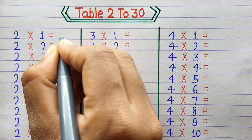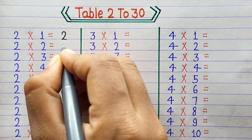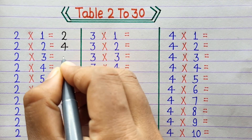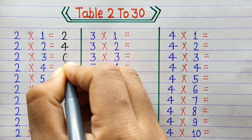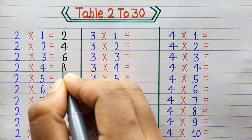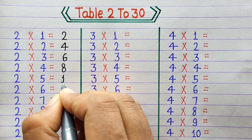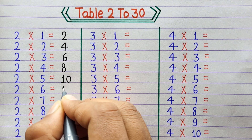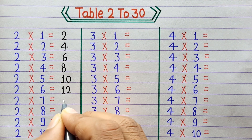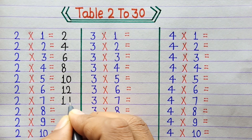Let's start. 2×1=2, 2×2=4, 2×3=6, 2×4=8, 2×5=10, 2×6=12, 2×7=14.